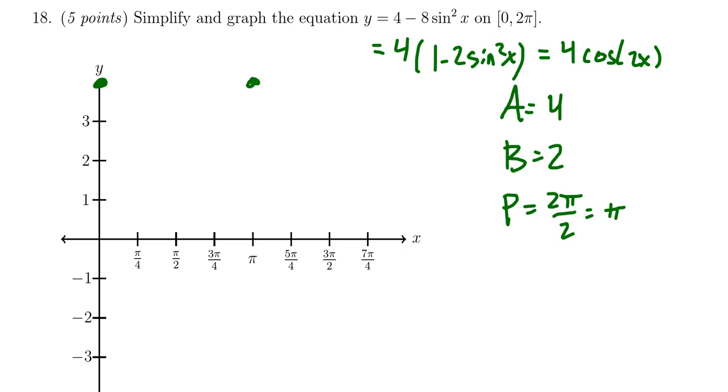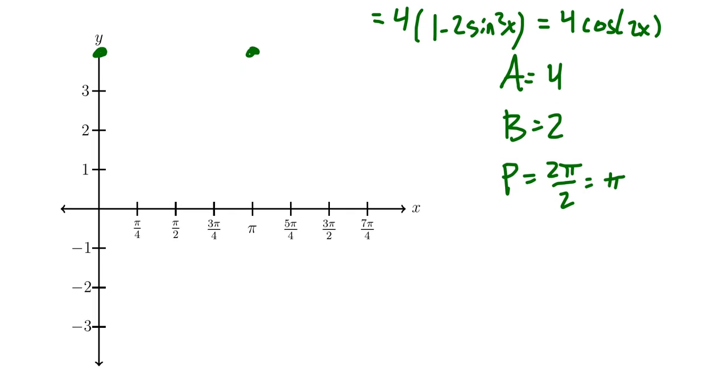Halfway in between is π/2, where it hits its minimum value. The x-intercepts will be between these maximum and minimum points.